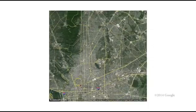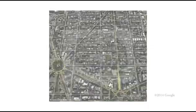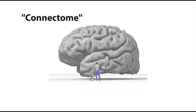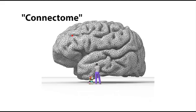Just like Google Maps for a city, neuroscientists have been working on a connectivity map for the brain. This connectome will help identify how neurons physically connect to one another.